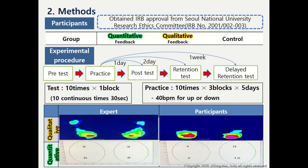There were pre-test, post-test, retention tests, and delayed retention tests. Each test proceeded with 10 continuous squats, 1 block, 30 seconds. The practice proceeded 10 times, 3 blocks per day, progressed over 5 days, at 40 BPM for up or down, which means 30 seconds for 10 repetitions.